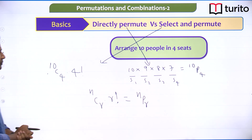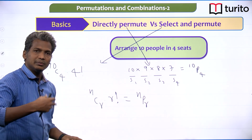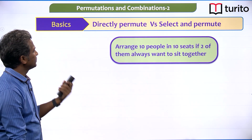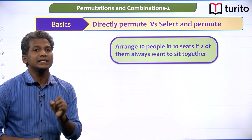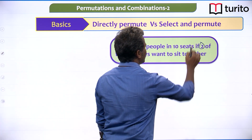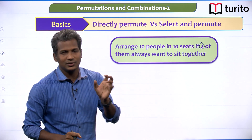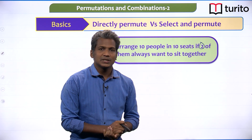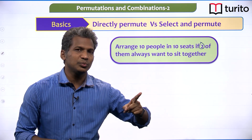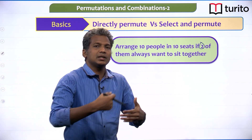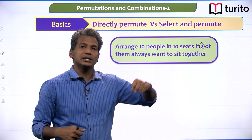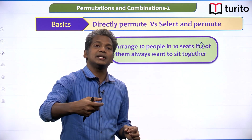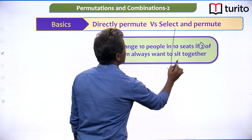Next problem: arrange 10 people in 10 seats if 2 of them want to be seated together (a couple). Using select-and-permute: imagine 10 places. We need to select a couple seat — two adjacent seats. How many couple seats are there in a row of 10? Counting them gives 9 couple seats. So select any 1 couple seat in 9C1 ways.